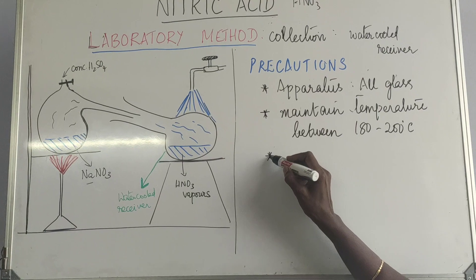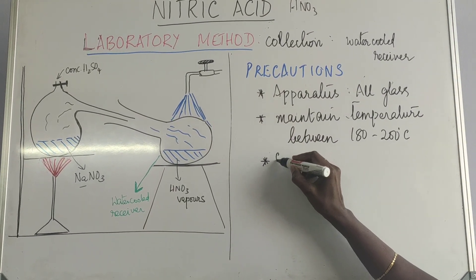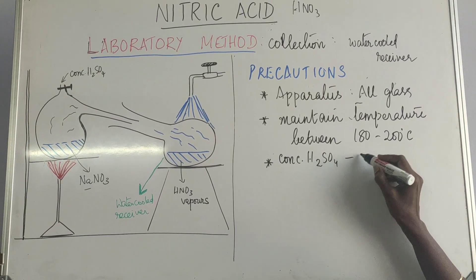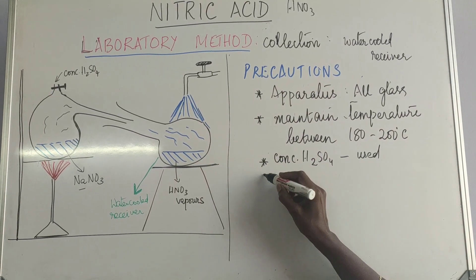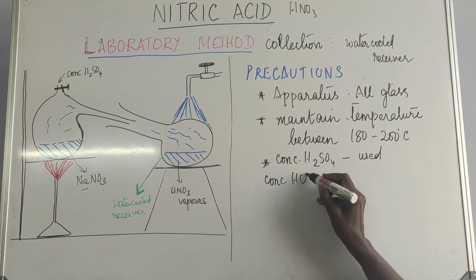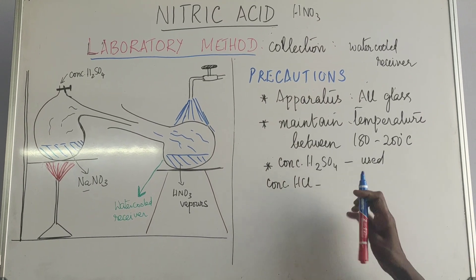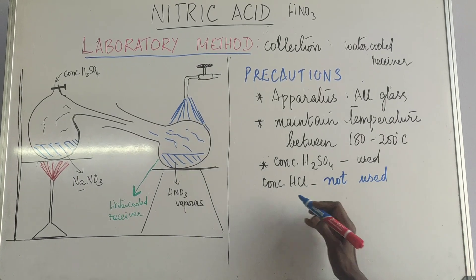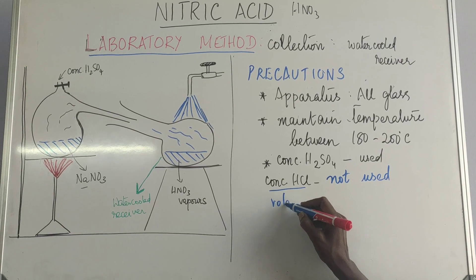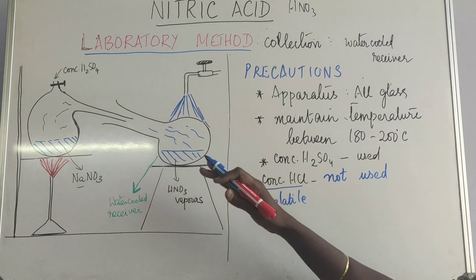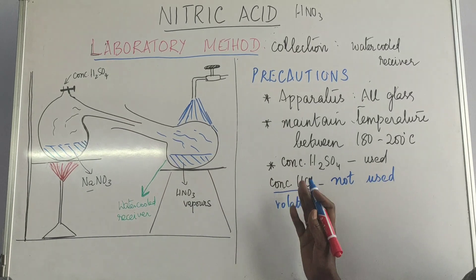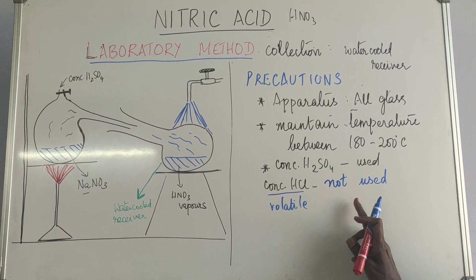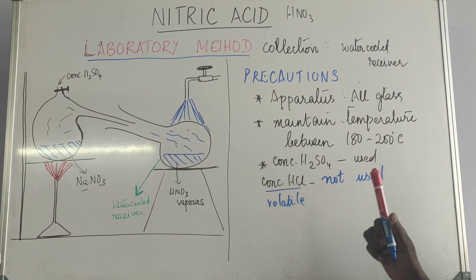And the third one that we need to take, we use only concentrated sulfuric acid used. And concentrated HCl is not used. Why it is not used because this is volatile. So one volatile, both will evaporate. So one volatile acid cannot displace another volatile acid. Therefore we should not use concentrated hydrochloric acid. So these are the three precautions that we need to take.